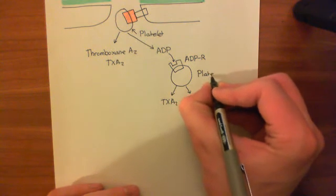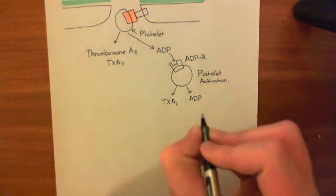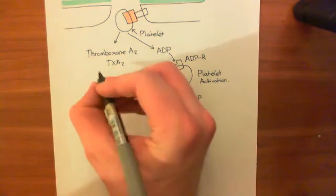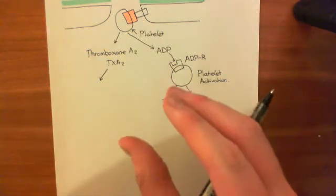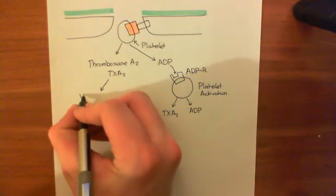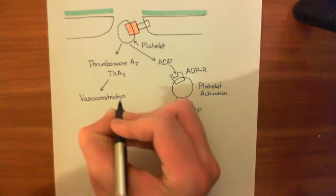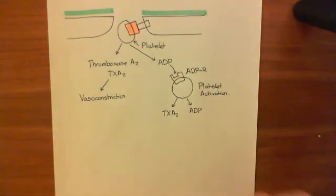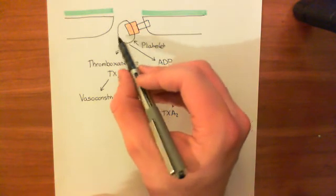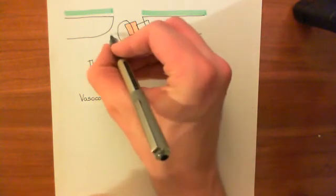It activates loads of platelets. So the other product of activation, thromboxane A2, must be more important. Thromboxane A2 does two major things. One, it causes vasoconstriction of the blood vessel to limit the blood flow to this area where you have a break in the endothelium. So it's trying to stop more blood coming here and leaking out. Vasoconstriction is one of its activities. But it has another role on platelets - thromboxane A2 causes the activation of another receptor in the platelet.